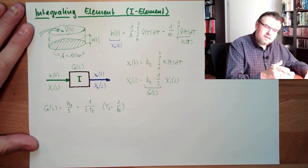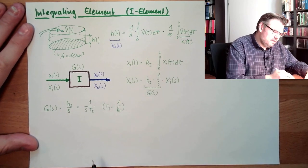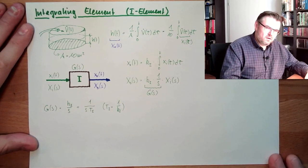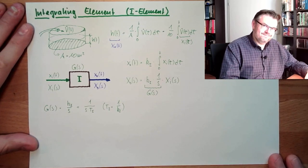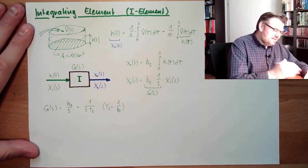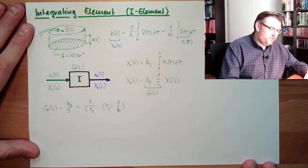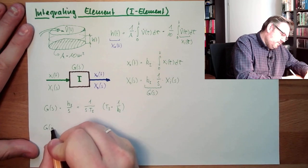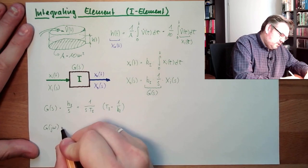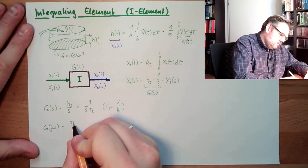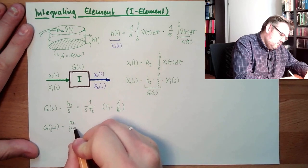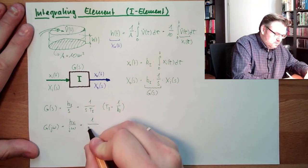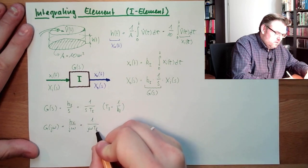Why do we use TI? I will explain afterwards. It's because I can see it — this KI I cannot really see, but this TI I can see. We will see it when we look at the step response. So what does this mean for the frequency response G? We said we can formally just exchange S with jω.